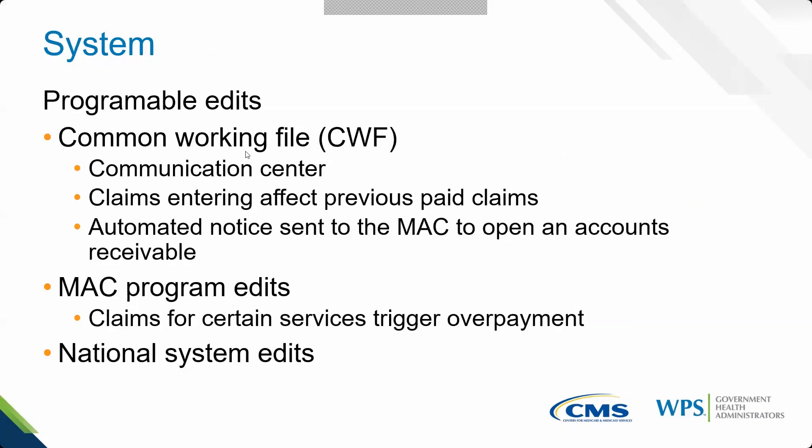Along with the Common Working File, there is the Fiscal Intermediary Standard System, or FISS, which processes UB-04 and 837I claims. A national contractor controls this system and builds national edits that can also trigger an overpayment. Along with FISS is the Multi-Carrier System, or MCS, which handles 1500 claims and 837P electronic transactions. National system edits and local edits can differ, and sometimes a claim triggers differently for a hospital versus a physician depending on the type of edit.